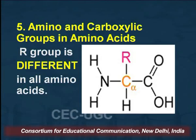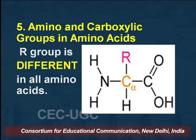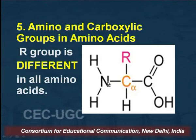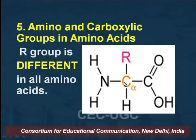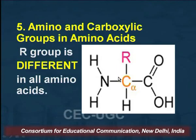The next biomolecule we discuss is the amino acid. In an amino acid, both the amino group and the carboxylic group are present. This is the amino group; this is the alpha carbon — and we call them alpha amino acids. Alpha amino acids are used in the synthesis of proteins and have two functional groups: the amino group and the carboxylic group.